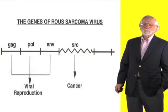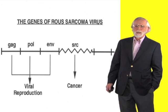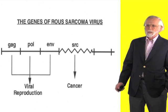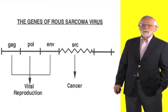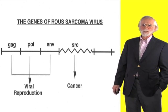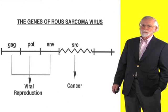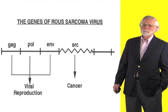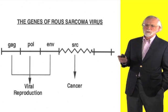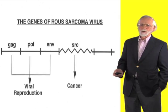In due course, we learned that Rous's sarcoma virus has four genes — only four genes — arrayed along its RNA genome as illustrated here. Three of these genes are responsible for viral reproduction. The fourth, the SARC gene, is responsible for cancer, but only the induction of cancer. It is not required for replication of the virus.